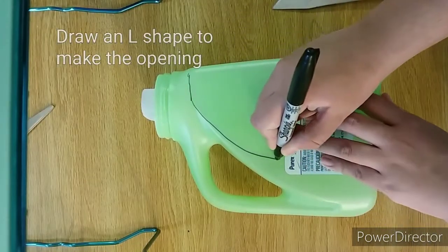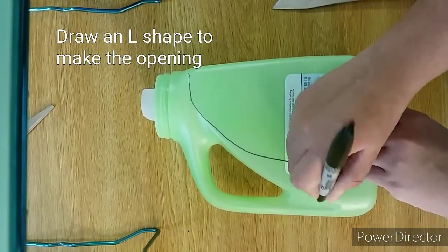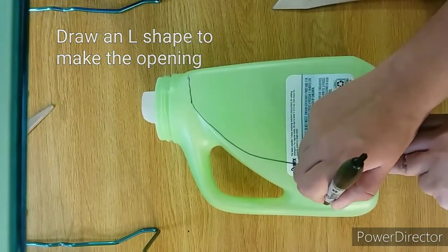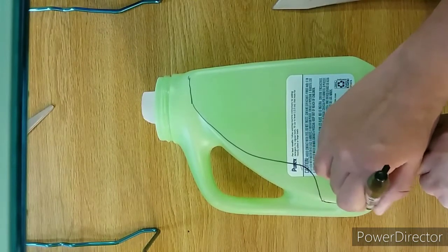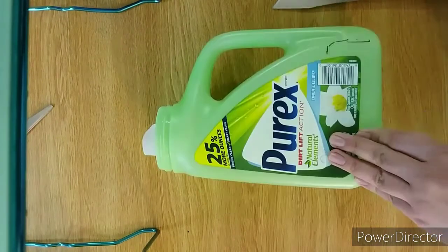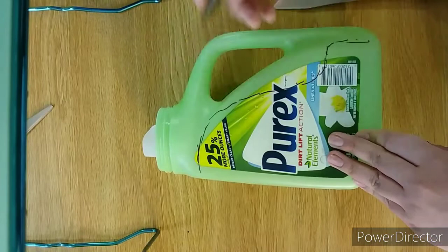To make a book organizer, first you are going to draw an L shape to make the opening. Basically you want to get rid of the handle and the top, and now you just do the same thing for the other side.